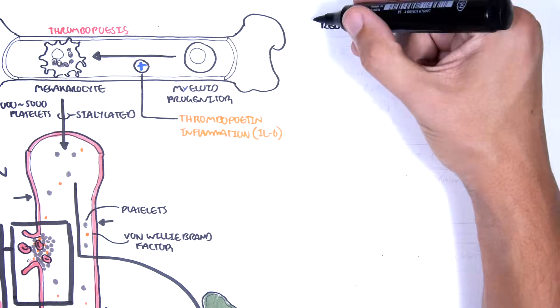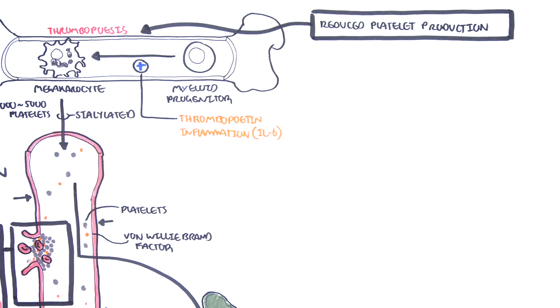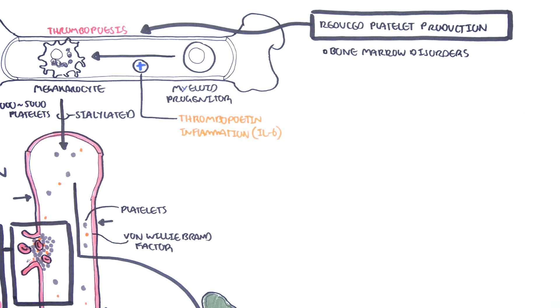One possible mechanism is through reduced production of platelets, such as in bone marrow disorders like bone marrow failure and acute leukemia.